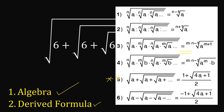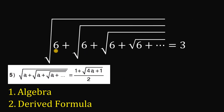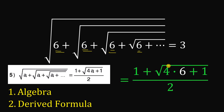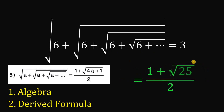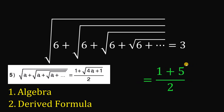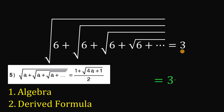Let's use formula number 5, replacing a with 6. We get 1 plus the square root of (4 times 6 plus 1), all over 2. Simplifying: 4 times 6 is 24, plus 1 is 25. The square root of 25 is 5. Then 1 plus 5 is 6, and 6 divided by 2 is 3. We've found the value of the expression using the shortcut method.